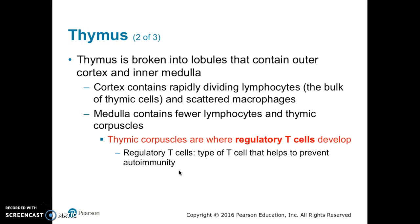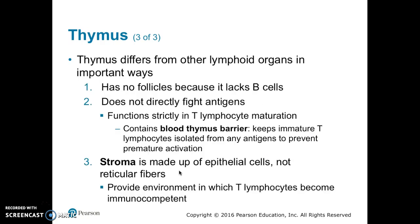The thymus is broken into lobules that contain an outer cortex and an inner medulla. The cortex contains rapidly dividing lymphocytes and scattered macrophages. The medulla has fewer lymphocytes than the cortex and also has thymic corpuscles. Thymic corpuscles are where regulatory T-cells develop. Regulatory T-cells are a type of T-cell that helps to prevent autoimmunity.